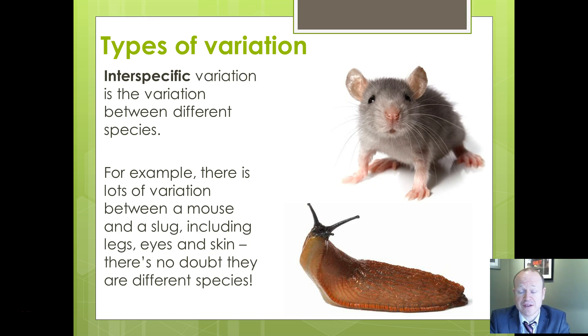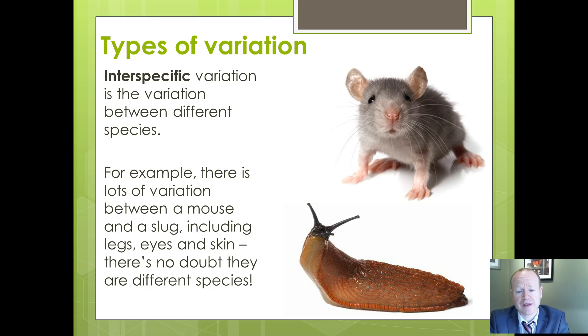Similarly, Darwin's finches are all different species but look quite similar, except for their beak shapes and a little bit of colouring. They are different species, even though the differences can be subtle.